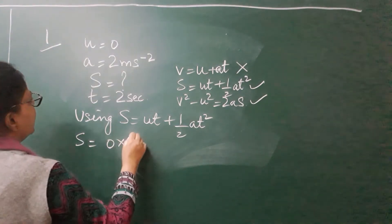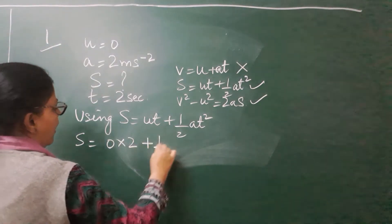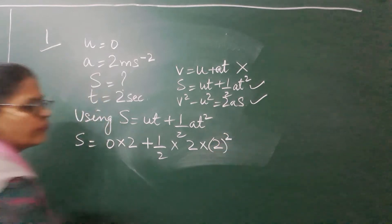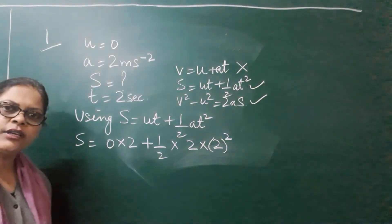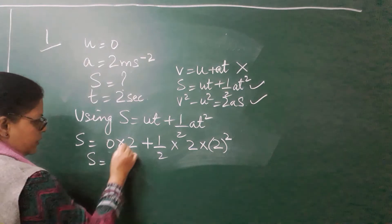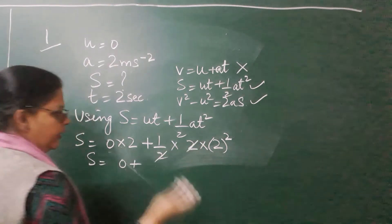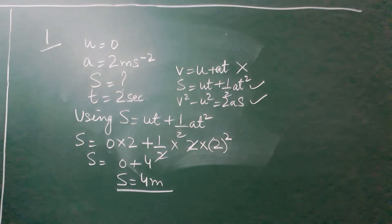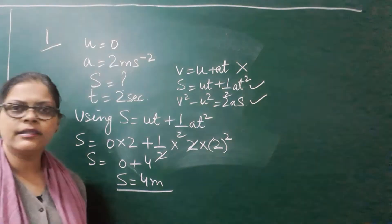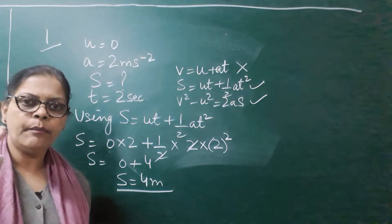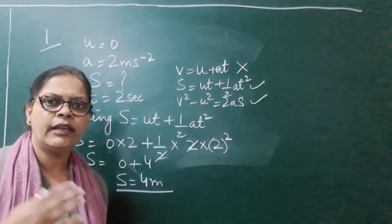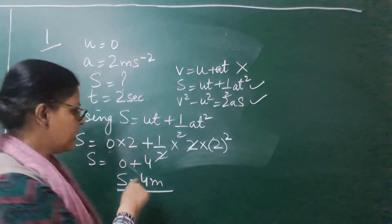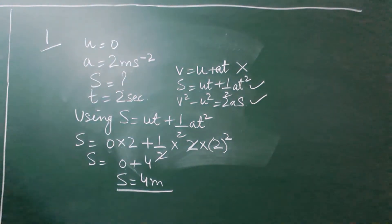Let us put the values. U is 0, T is 2, A is 2, T² is 4. The first term becomes 0. Finally, S = 4 meters. This is my answer. The numericals are not difficult; the calculation is also very simple. The main thing is that you read the numerical carefully and decide which formula to use.